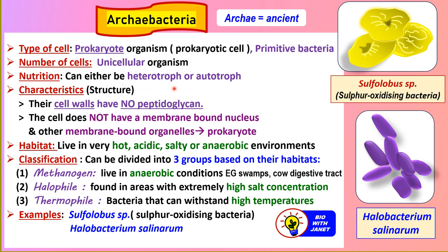In terms of nutrition, archaebacteria can either be heterotrophs or autotrophs — they can obtain food from other organisms or produce it through processes like chemosynthesis. As for cell structure, the cell walls have no peptidoglycan. This compound, made up of sugars and amino acids, is only found in eubacteria. That's how we differentiate archaebacteria from eubacteria, which have peptidoglycan in the cell walls.